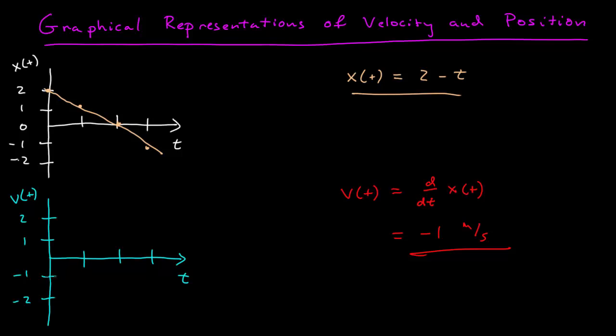So if I were to plot that here, it would be a straight line at negative 1, it's constant. As time goes along, the velocity doesn't change. It's a vector, so it has a magnitude of 1, and it points in the negative x direction.